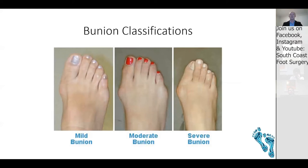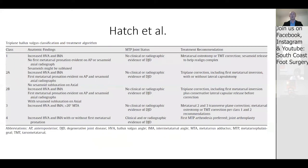The simple bunion classification of mild, moderate, and severe doesn't cater for everything needed as a surgeon — it's very two-dimensional. A classification by Hatch and colleagues from 2019 introduces the frontal plane and what's happening to the first metatarsal in the sesamoid complex. Within that frontal plane, when not managed, there are increased rates of dissatisfaction due to recurrence.